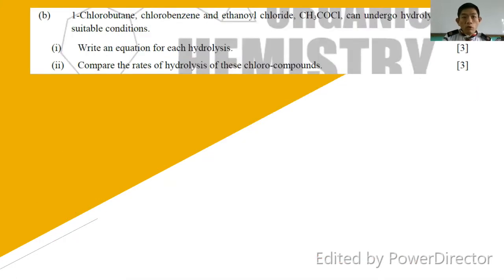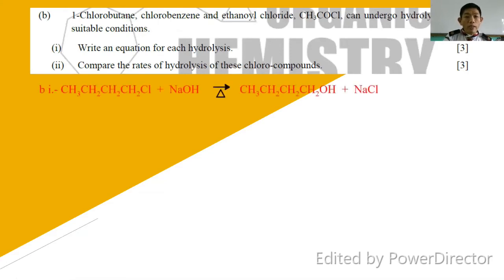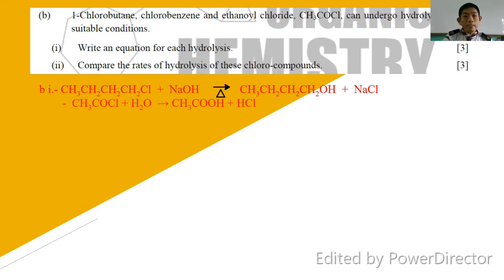For question 2b: 1-chlorobutane, chlorobenzene, and ethanoyl chloride CH3COCl can undergo hydrolysis under suitable conditions. Write an equation for each hydrolysis. For 1-chlorobutane, it is simply NaOH under reflux: CH3CH2CH2CH2Cl plus NaOH under reflux gives butan-1-ol plus NaCl. For ethanoyl chloride, you simply react with water at room temperature — if you write reflux, the answer will be wrong. For ethanoyl chloride, all you need is water.